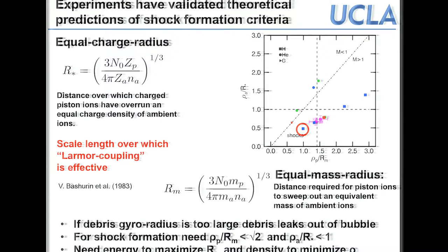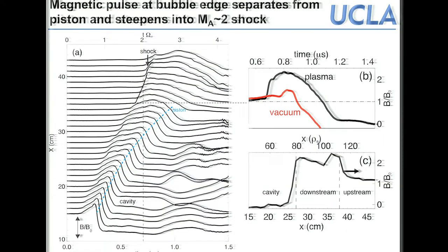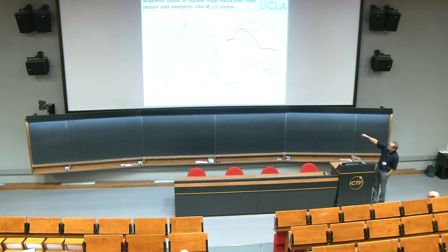Here is data from a shock case: magnetic field profiles as a function of time measured with a B-dot probe, each line representing one shot at a different distance from the target. You can see the magnetic pulse and then the piston — the diamagnetic bubble — moving at about Mach 2 (600 km/s). The piston eventually stalls at about half a meter in size, and most importantly the pulse at the edge of the bubble separates from the piston and steepens into a shock.